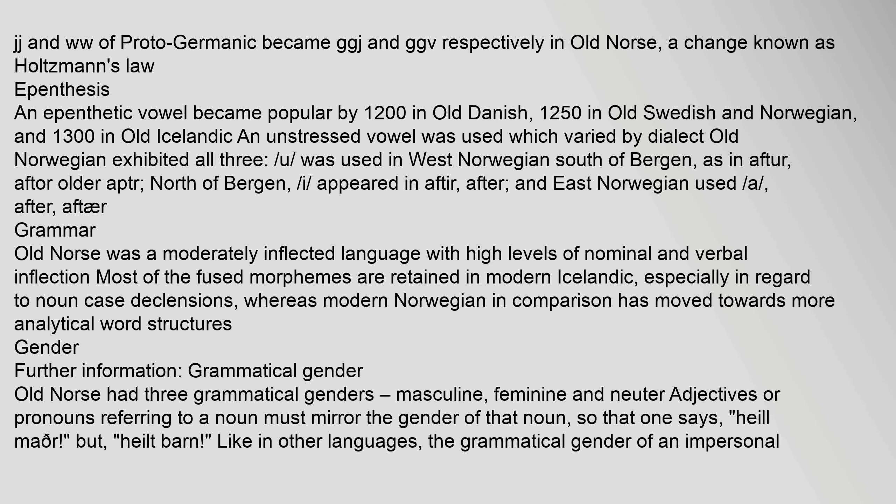Old Norse was a moderately inflected language with high levels of nominal and verbal inflection. Most of the fused morphemes are retained in modern Icelandic, especially in regard to noun case declensions, whereas modern Norwegian in comparison has moved towards more analytical word structures. Old Norse had three grammatical genders: masculine, feminine and neuter. Adjectives or pronouns referring to a noun must mirror the gender of that noun.